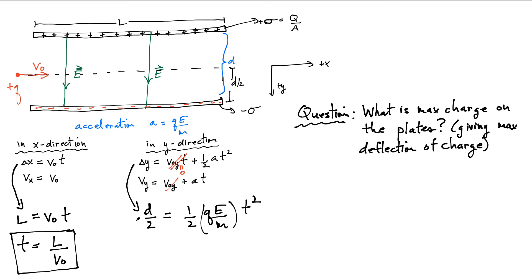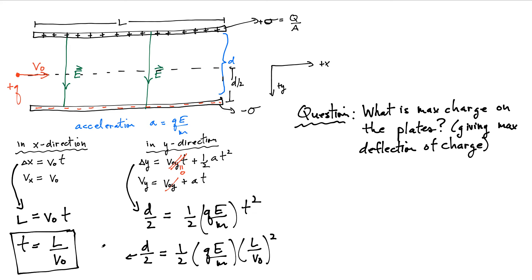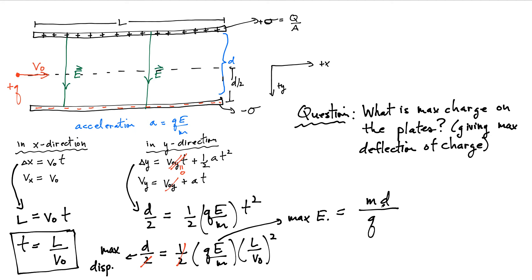Substituting t = L/V₀ into our y displacement equation gives: d over 2 equals one half times (QE/m) times (L/V₀)². This is the maximum displacement condition, which also defines the maximum electric field producing that displacement. The one-half terms cancel, and doing a little algebra we isolate E_max: the maximum electric field that produces maximum displacement is E_max = m·d·V₀² divided by (q·L²).